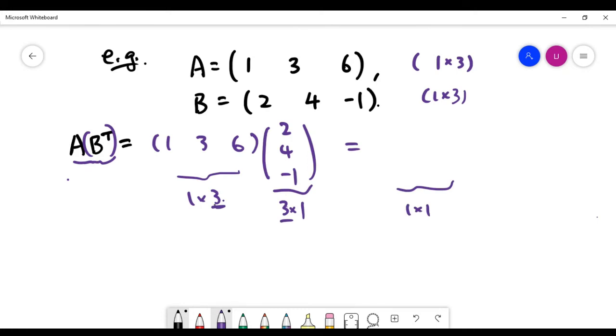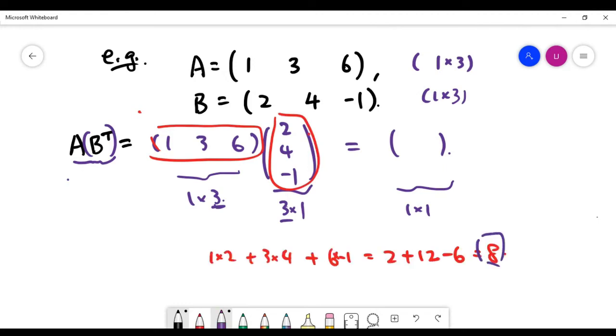You should get back a one by one matrix after the matrix multiplication. One by one means it is just one single number. To find this single number, essentially you just have to multiply the row with the column. If you do the arithmetic, it's going to be 8.